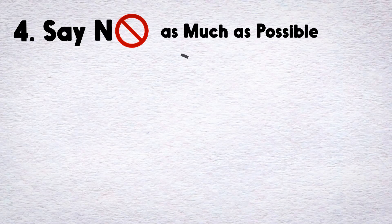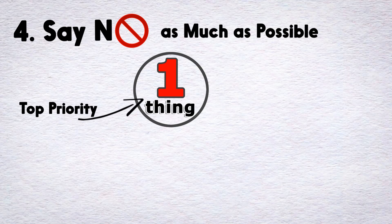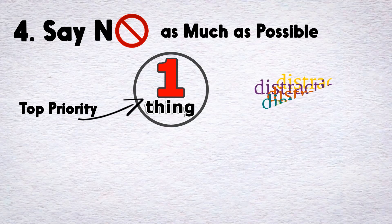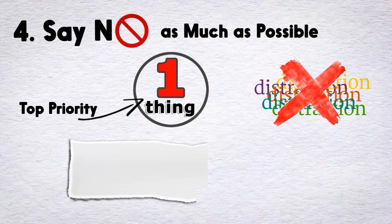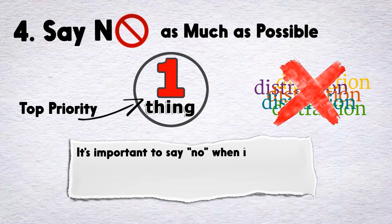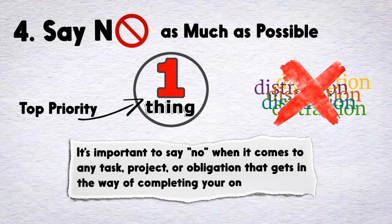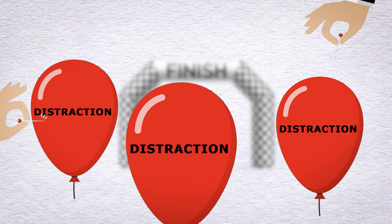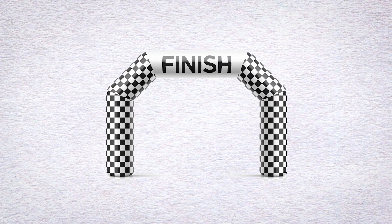Number 4. Say no as much as possible. Remember, since you already know that your one thing is a priority, treat everything else as a distraction that takes you away from completing this all-important task. So that's why it's important to say no when it comes to any task, project, or obligation that gets in the way of completing your one thing. Your goal is to remove all the distractions and focus on completing the one task that you know is critical to your long-term success.